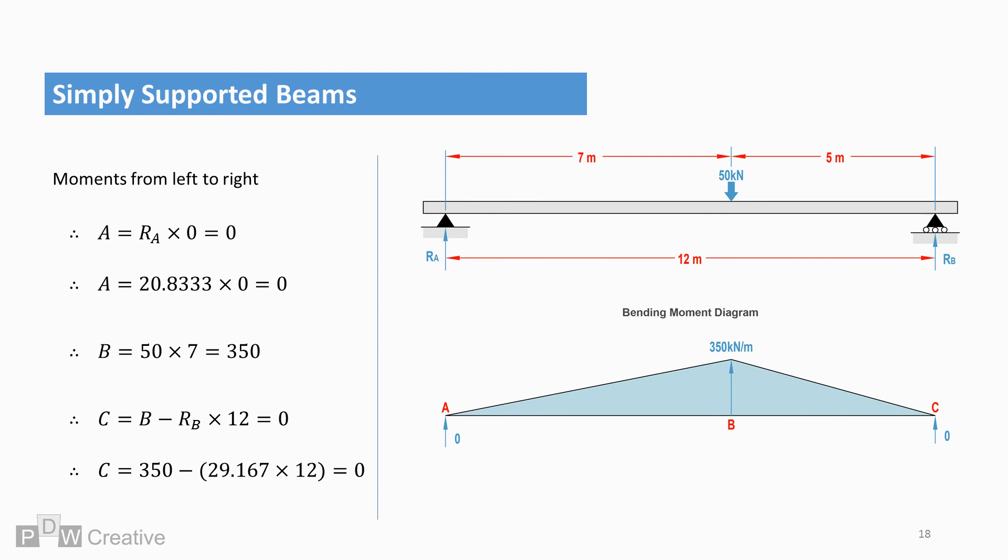Point C is a support which opposes the load at 12 m from A. So B minus RB times 12 equals 0 at point B. The bending moment diagram is upwards in direction, meaning it's positive. This translates as meaning sagging is occurring at point B to the effect of 350 kN per meter.